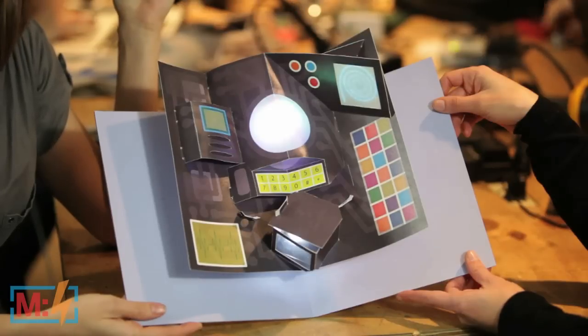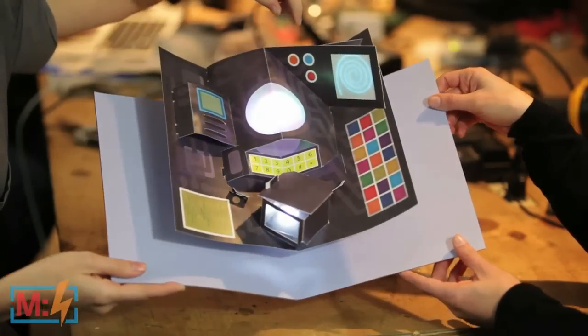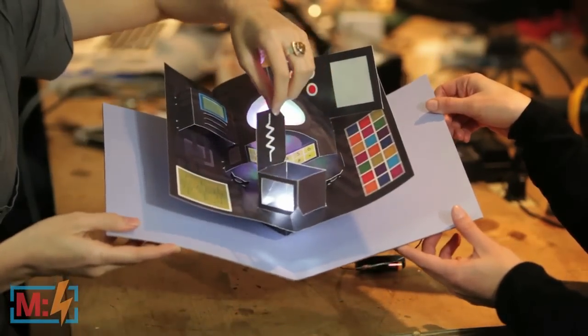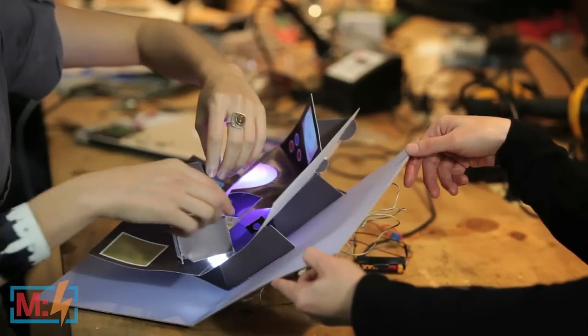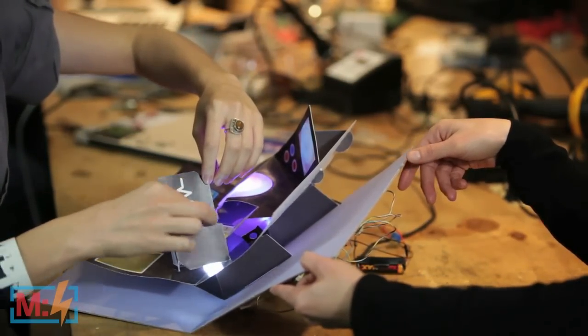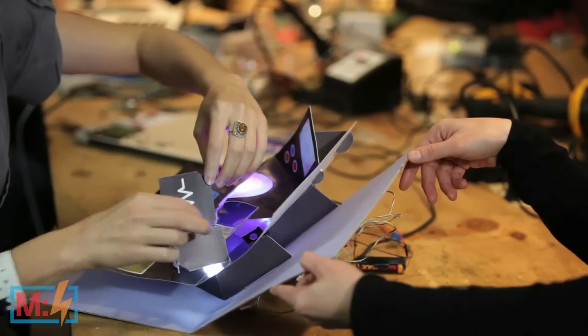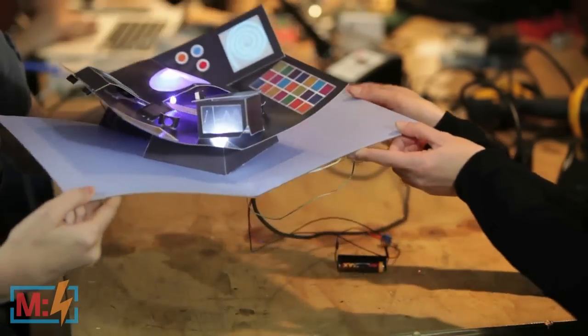And then down here we have a Pepper's ghost image. So if you're familiar with Pepper's ghost, it's actually an image that's on the inside of this box with a transparent piece of plastic there. The way that it is angled with the light shining up, you can actually see the image as a ghost image on the back of the box.